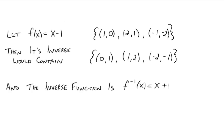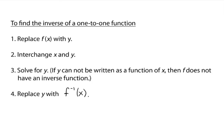So now let's talk about how to find the inverse of a one-to-one function. First, replace the function notation with y. The whole idea between a function and its inverse is that the x and y values interchange — they switch spots. So we interchange x and y, then take the new equation and solve for y, getting y in terms of x. If y cannot be written as a function of x, then f does not have an inverse function. Once we've isolated y, we replace y back with inverse function notation.